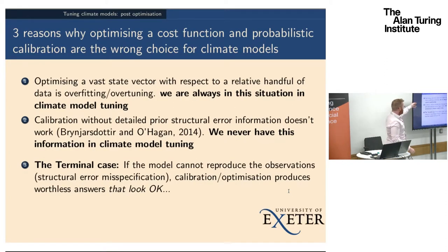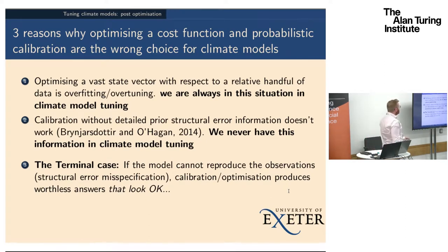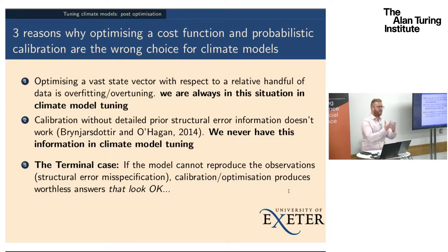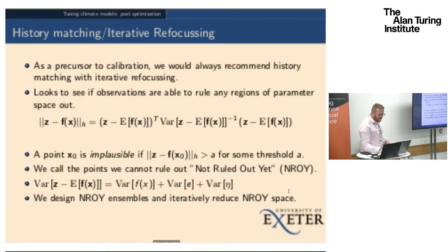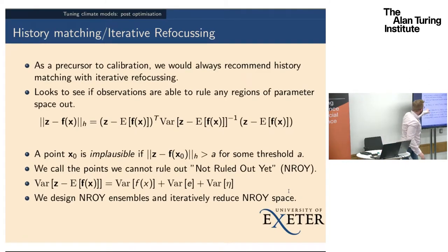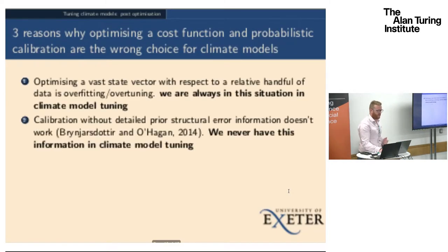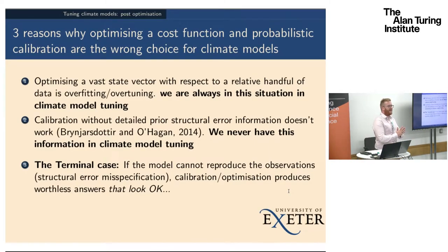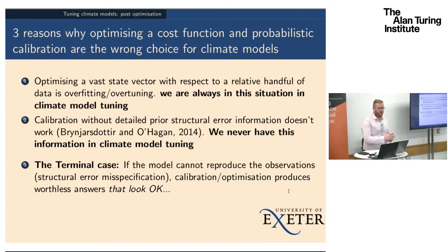Finally, and related to the identifiability issue, is what we call in our last paper the terminal case: given that you did this, if the model cannot get close enough to the observations, then in a history matching sense you get this space being empty — that's bad. But if you try to optimize, you get very badly wrong answers, and you won't know that you got badly wrong answers. So you'll take your model off into the future.